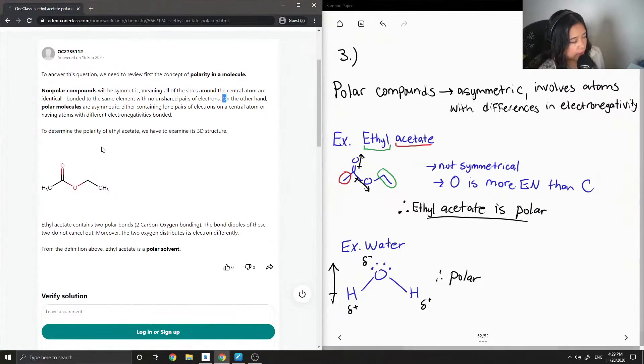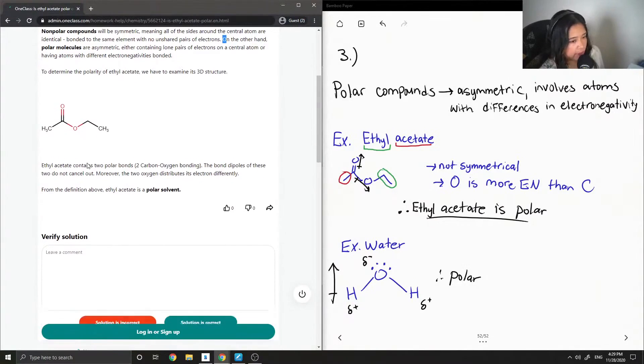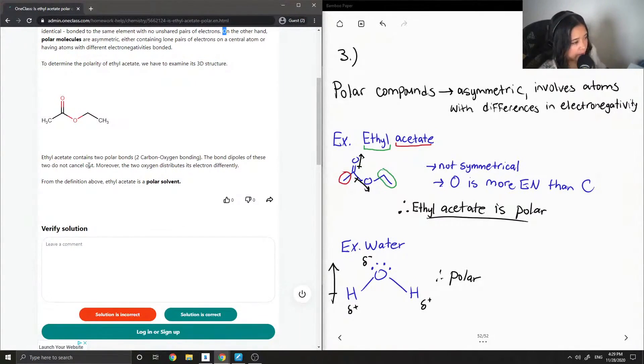So to determine the polarity of ethyl acetate, we need to examine its 3D structure. So they drew it out as well. Ethyl acetate contains two polar bonds, two carbon-oxygen bonding. The bond dipoles of these two do not cancel out. Moreover, the two oxygen distributes its electron differently because one of them is double bonded. From the definition above, ethyl acetate is a polar solvent.